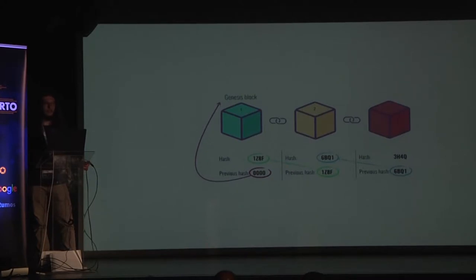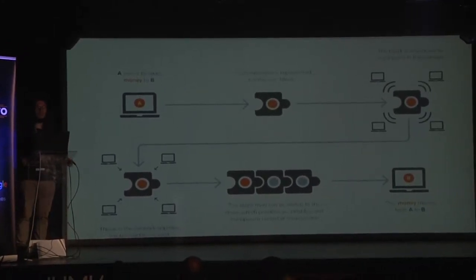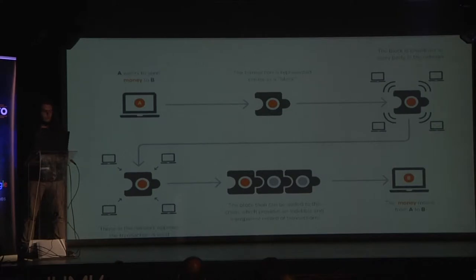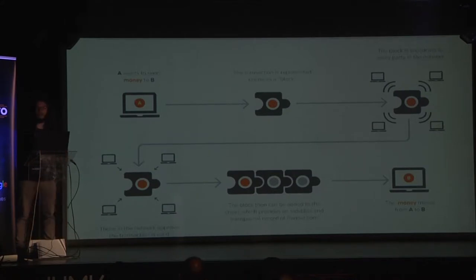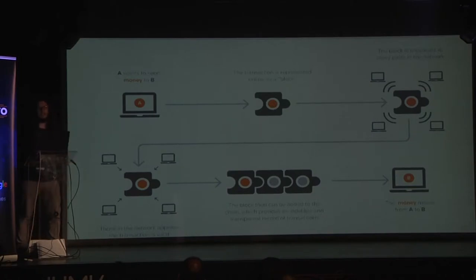You probably ask how and when those blocks appear. Let me take the example of Bitcoin. If I want to transfer Bitcoin to someone, when I start the transfer, this transaction will be represented as a block and broadcast to every node on the network. These nodes need to validate the transaction, and after at least 51% of the nodes validate it, it will be added to the chain and the transaction is done.